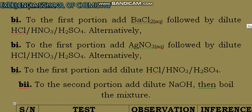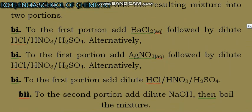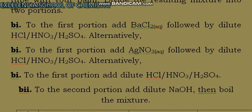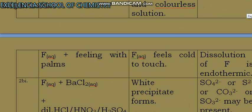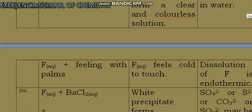Test 2bi says: To the first portion add barium chloride aqueous followed by dilute mineral acid. I presented it like this because we can be asked to use either of these. Any of these would give you the same result.